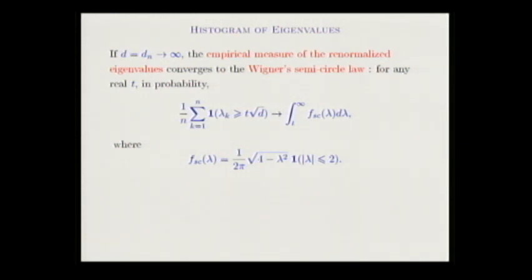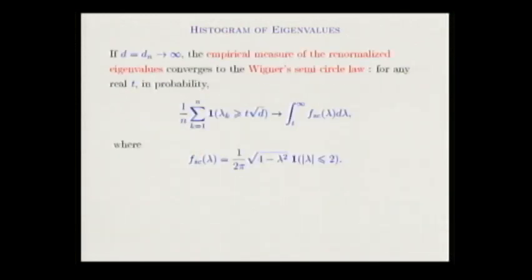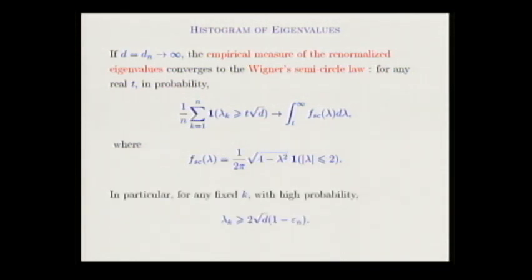The regime I am interested in is governed by random matrix theory: when the degree goes to infinity at any rate as the matrix size goes to infinity, it is easy to see that the histogram of eigenvalues converges to the semicircular law when renormalized by square root d. So the only consequence is that any of the k-th largest eigenvalues is at least 2 times square root of d up to a vanishing factor.